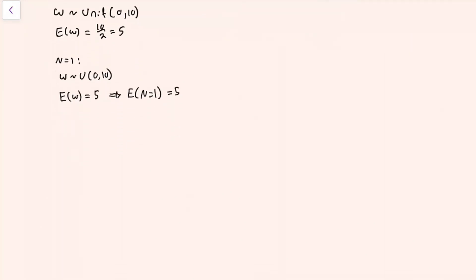When there are two rounds, n is 2. The first thing that happens is we draw some winning from the deck, then we decide if we want to stop or play again. When evaluating this decision, we should consider whether we expect to make more on the second round than we did on this round — that is, whether the current winnings exceed the expected value of the game when n is 1. There's a set of values where we would not want to play again, which I'll call sn.